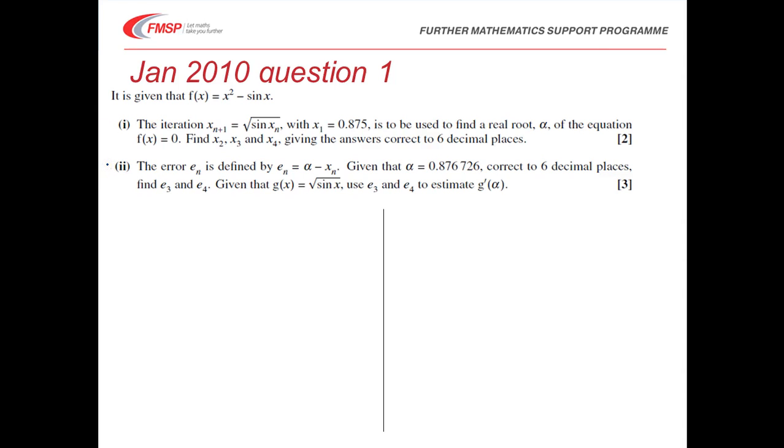In part 2, it's about errors. We're told that e_n is defined by alpha minus x_n, and given the value of alpha correct to six decimal places, we're asked to find e_3 and e_4, and hence estimate the derivative g'(alpha), given that g(x) is this function root sin x.